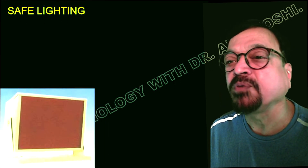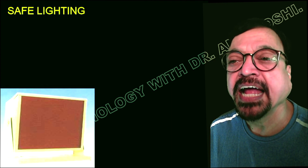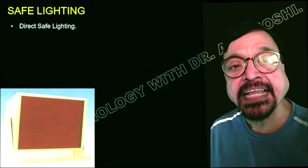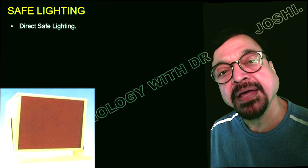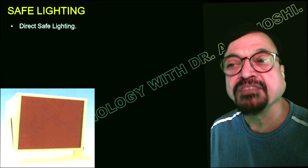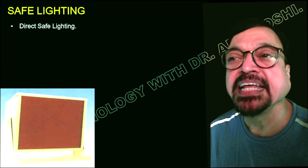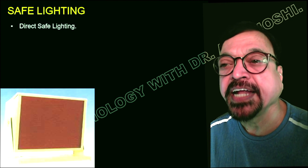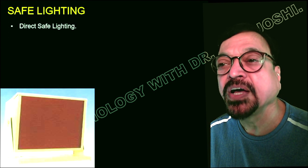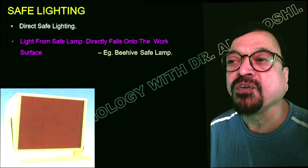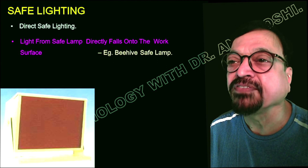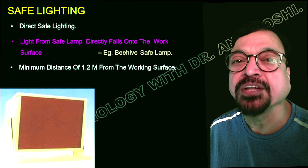Now, this is the safe light. It has got a tin box and there is a filter to it — that is a red filter. So what it does is it gives you only red light out. Why red light? Because films are not sensitive to it. If the film is sensitive and the light has the same color, the film will get fogged. Here, the safe light is of red color because films are not sensitive to red. Films are either blue base or green base — both are not sensitive to red. Light from the safe light directly falls onto the workspace. This type of safe light is called a beam safe light, which gives good light on your workstation.